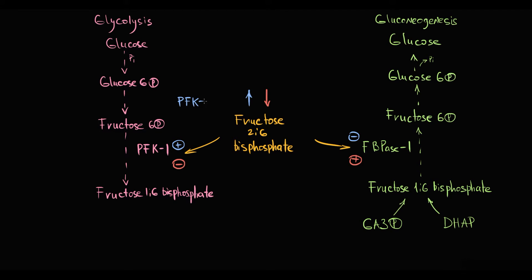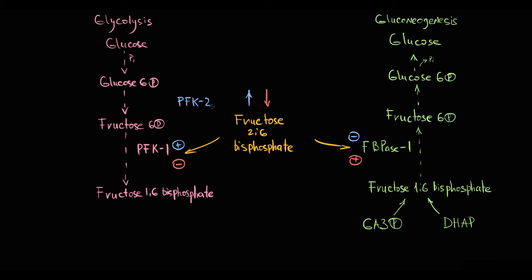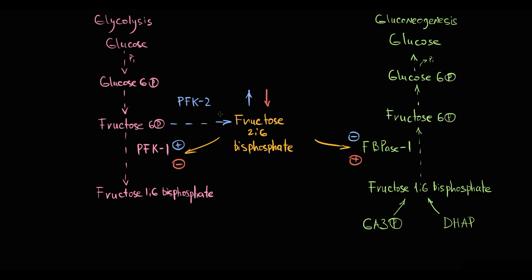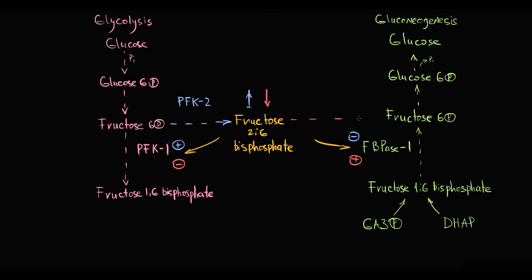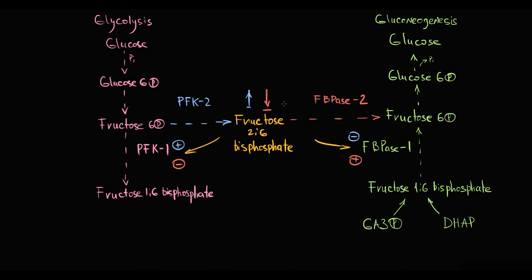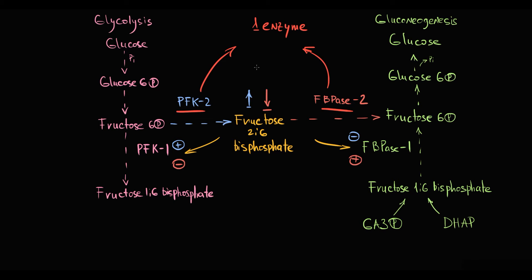The concentration of fructose-2,6-bisphosphate is regulated by two enzymes. The first is phosphofructokinase-2, PFK2. PFK2 converts a small amount of fructose-6-phosphate into fructose-2,6-bisphosphate, increasing its level. The second enzyme is fructose bisphosphatase-2, FBPase2. FBPase2 degrades fructose-2,6-bisphosphate into fructose-6-phosphate, decreasing its level. Actually, PFK2 and FBPase2 are two different domains of one enzyme, but to simplify, we can imagine them as two separate enzymes.